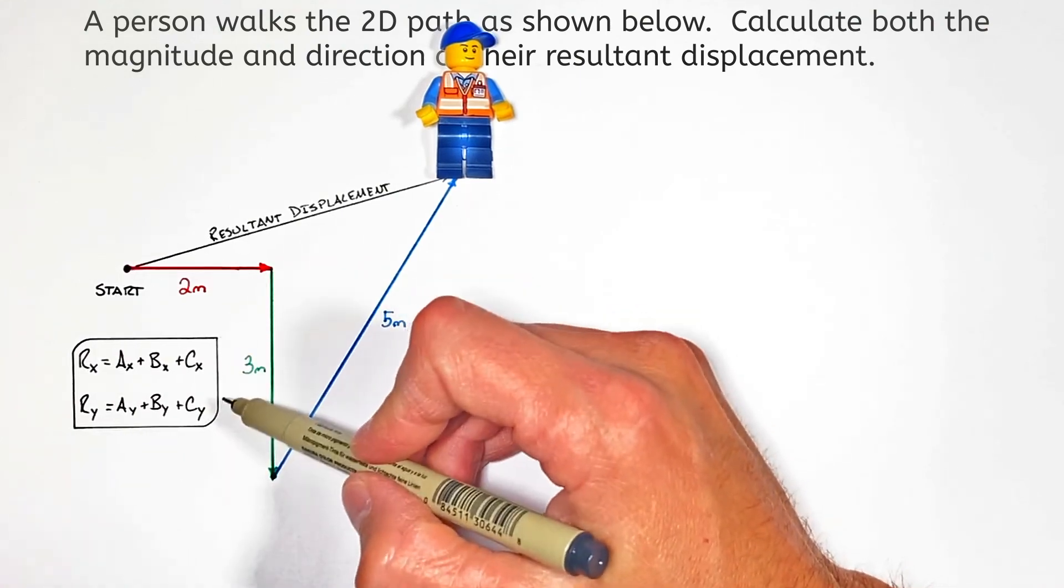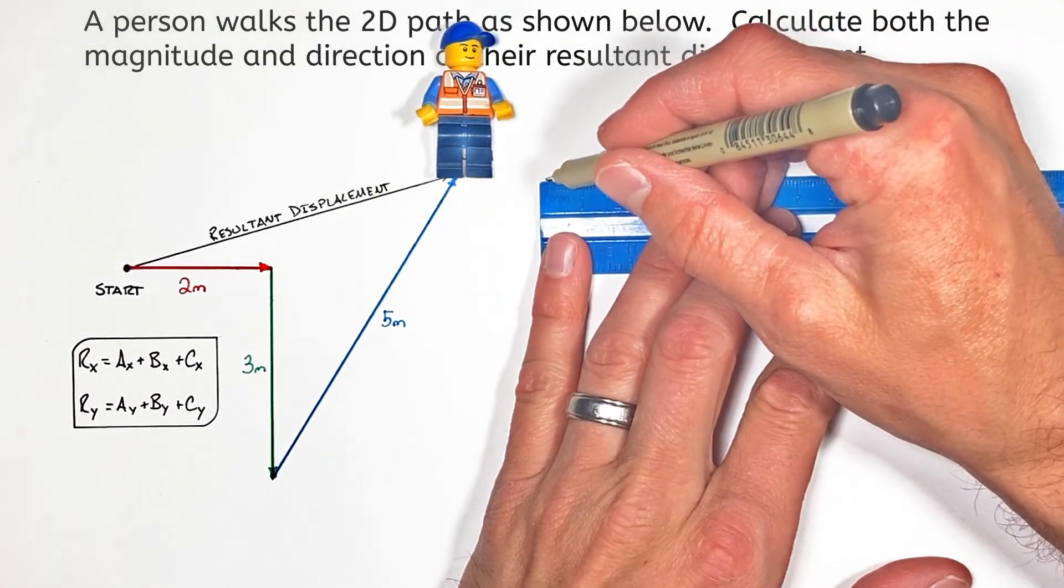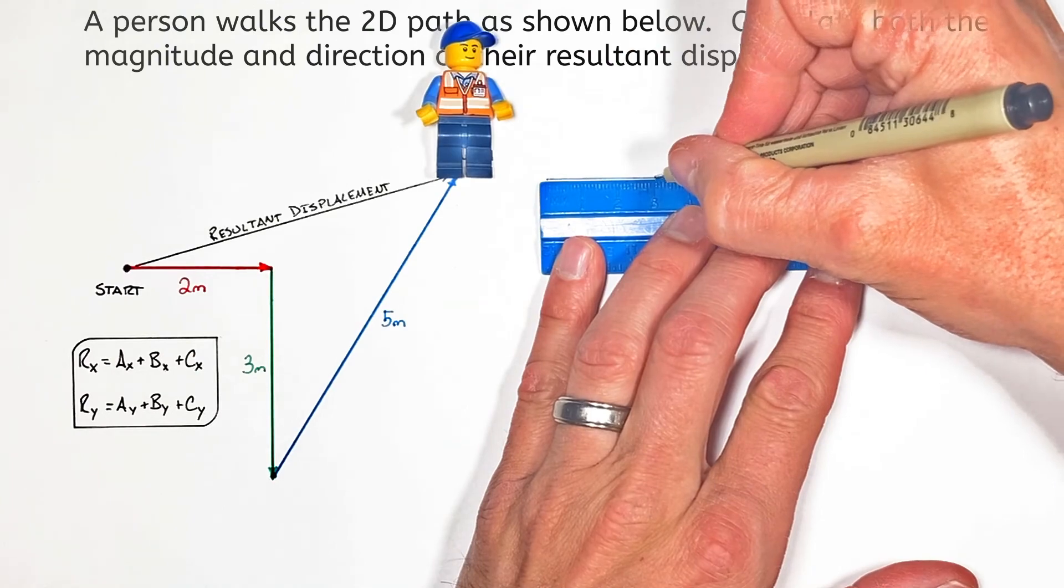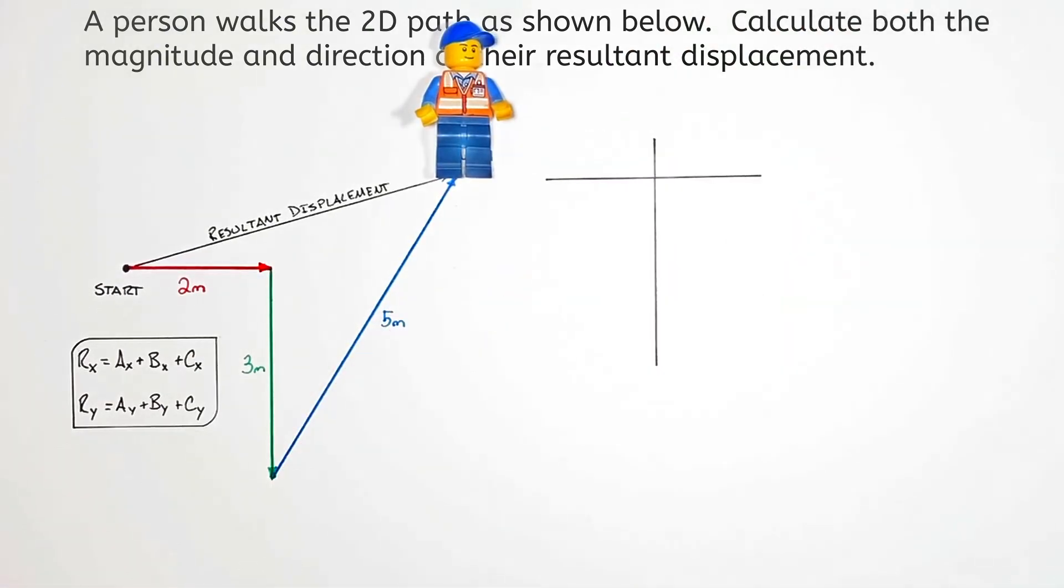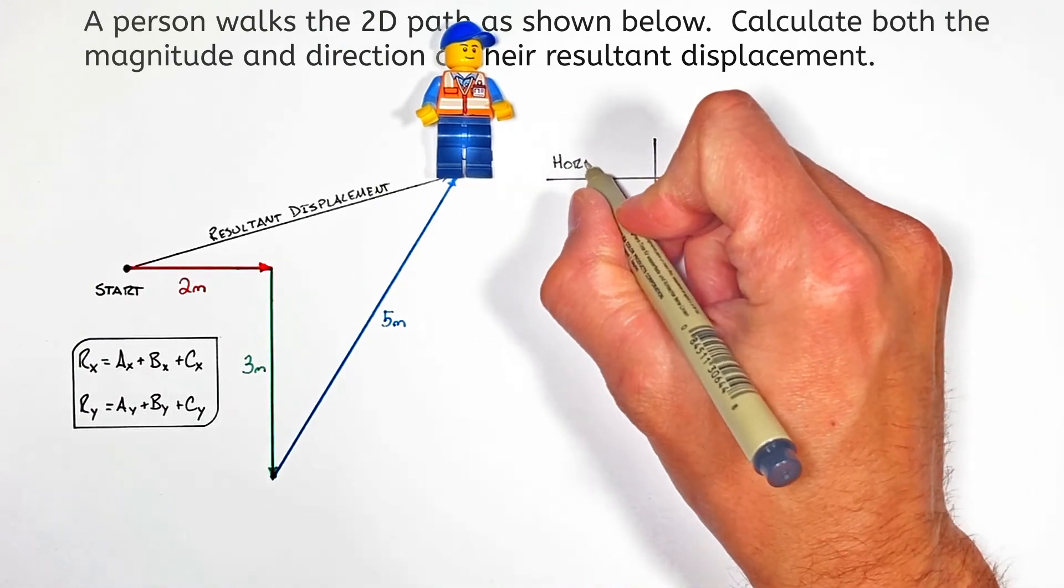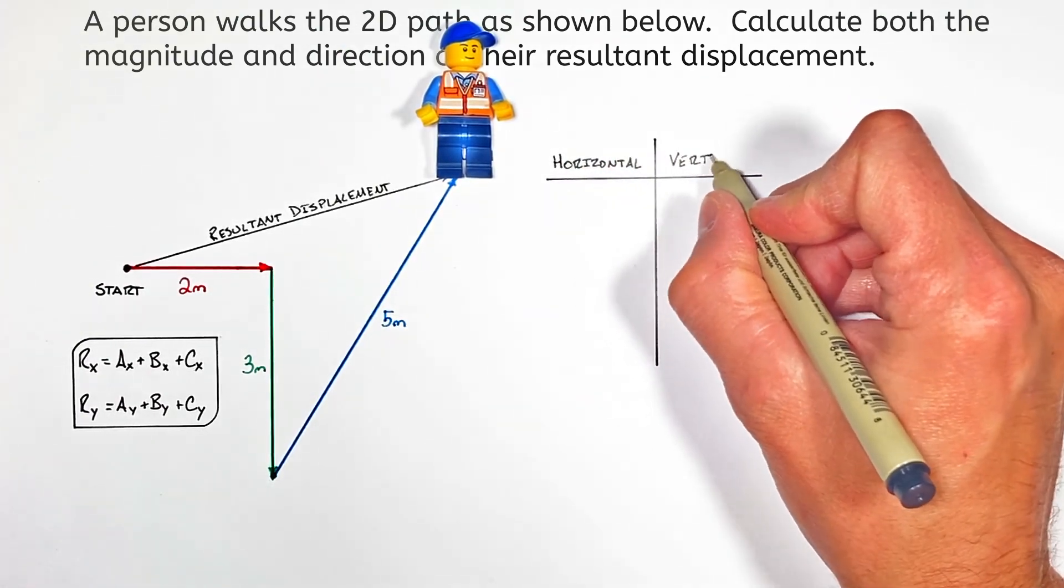To make sense out of these equations and to add these vectors together, we're going to set up a data table. On one side we're going to look at the horizontal components of each displacement vector, and on the other side we're going to look at the vertical components of each displacement vector.